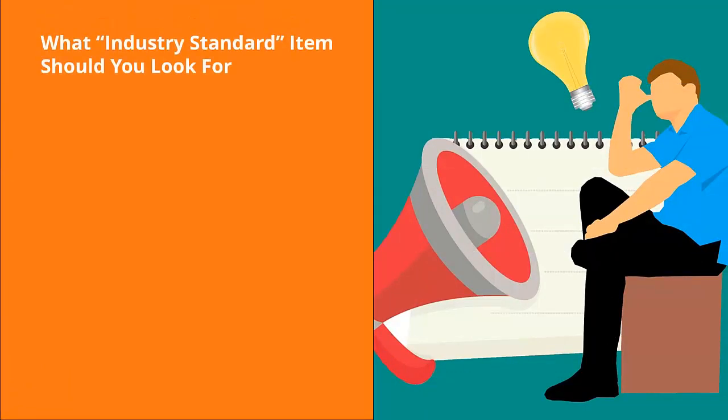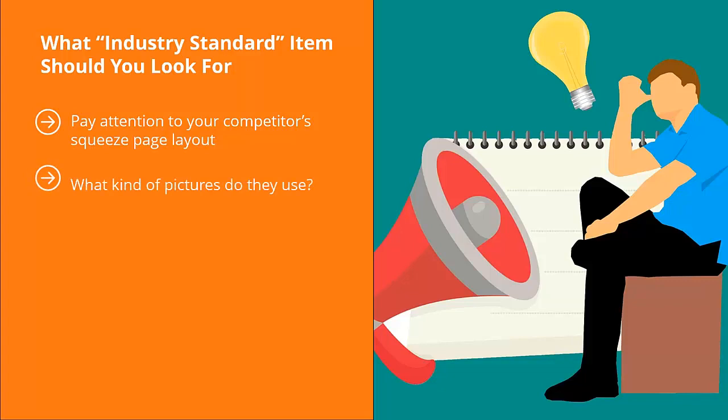What industry standard items should you look for? Pay attention to your competitors' squeeze page layout — the sign-up page they use to get their target audience to join their mailing list. Pay attention to how they lay out these pages: what kind of pictures they use, what kind of text they present, how they format their text, whether they tell stories, and whether they show videos.